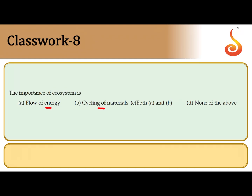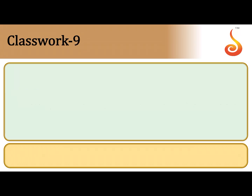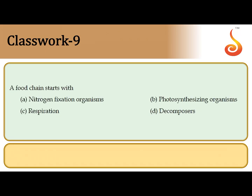The eighth question: the importance of ecosystem includes both the flow of energy as well as the cycling of material. So the correct answer is option C, it is both option A and option B.